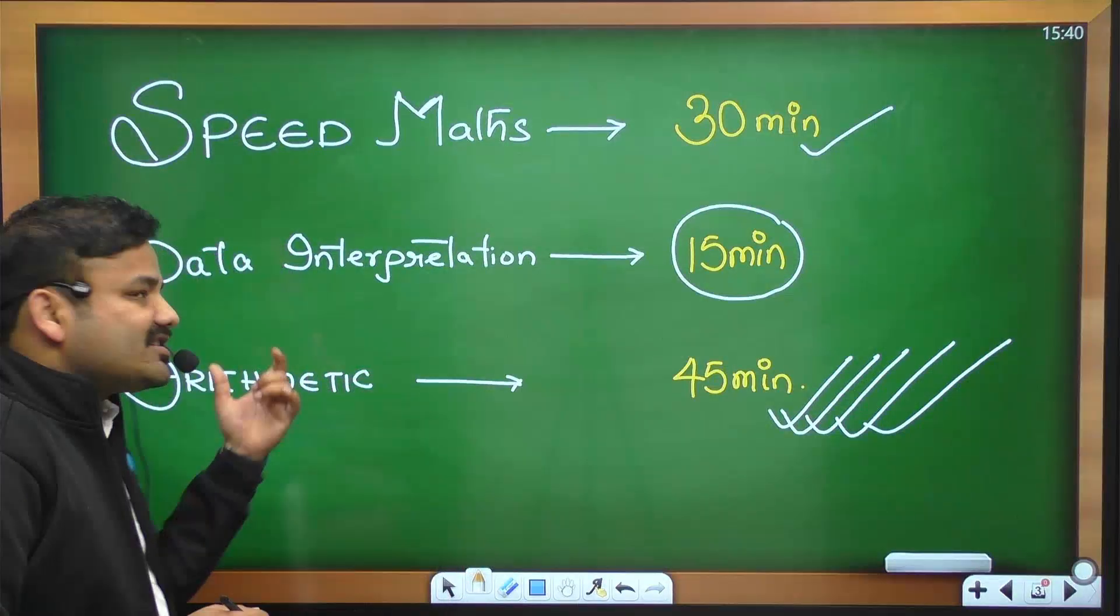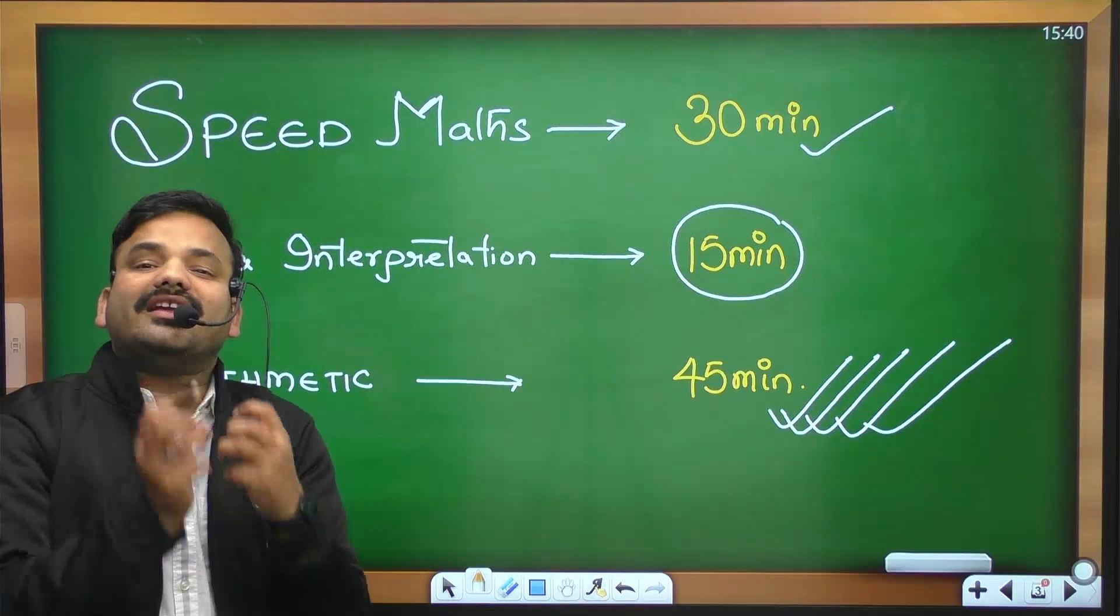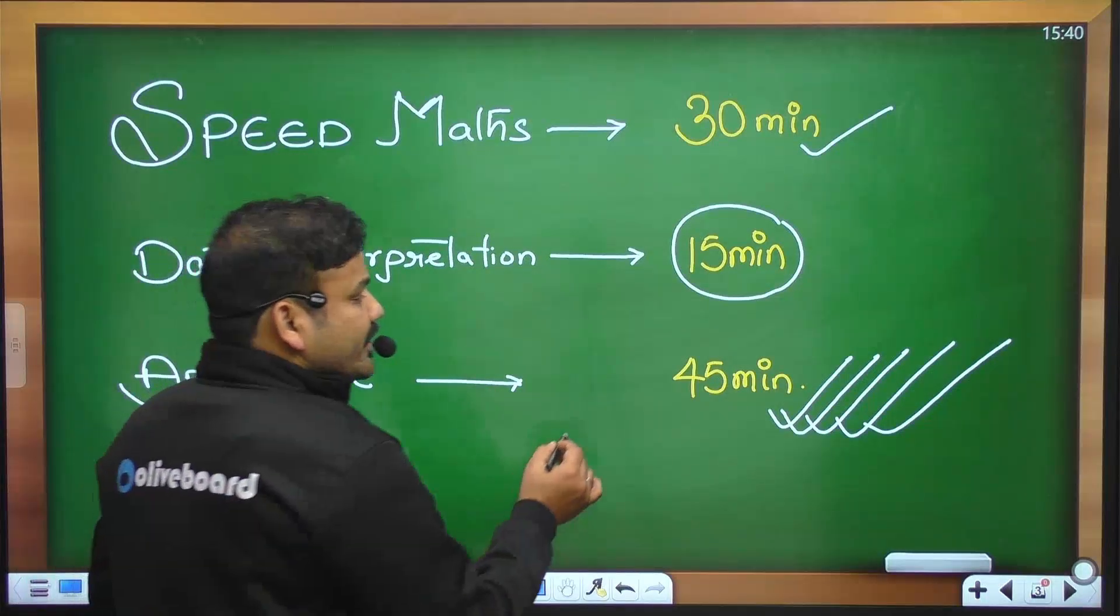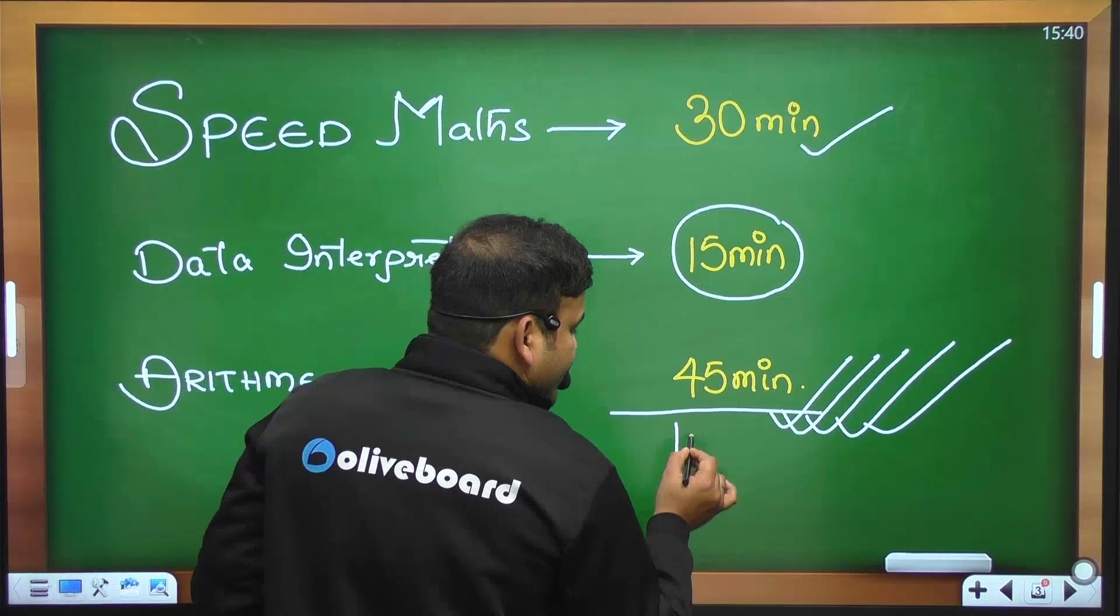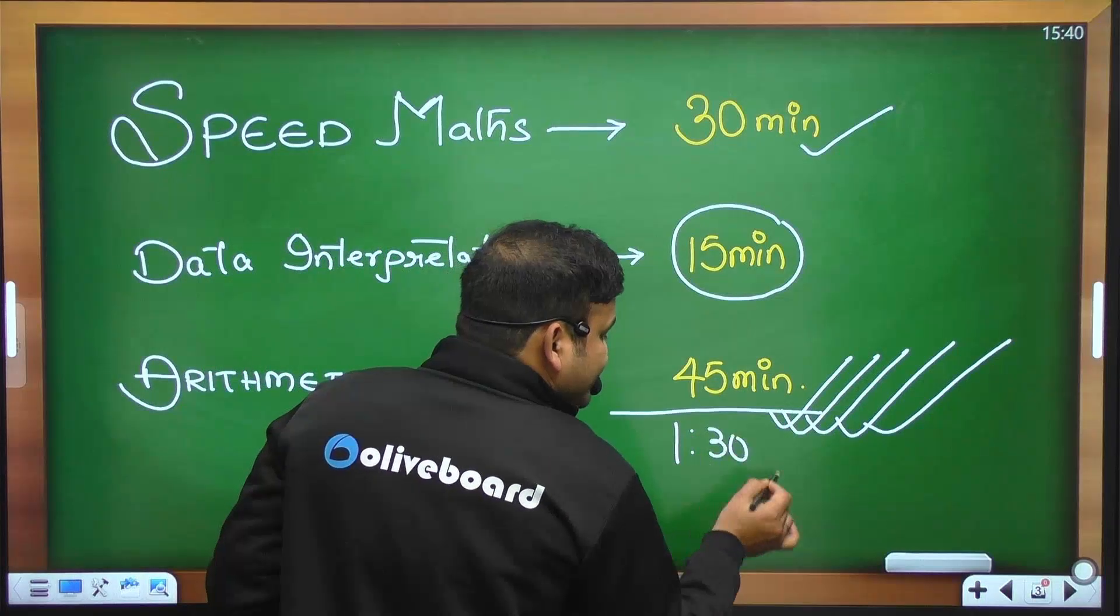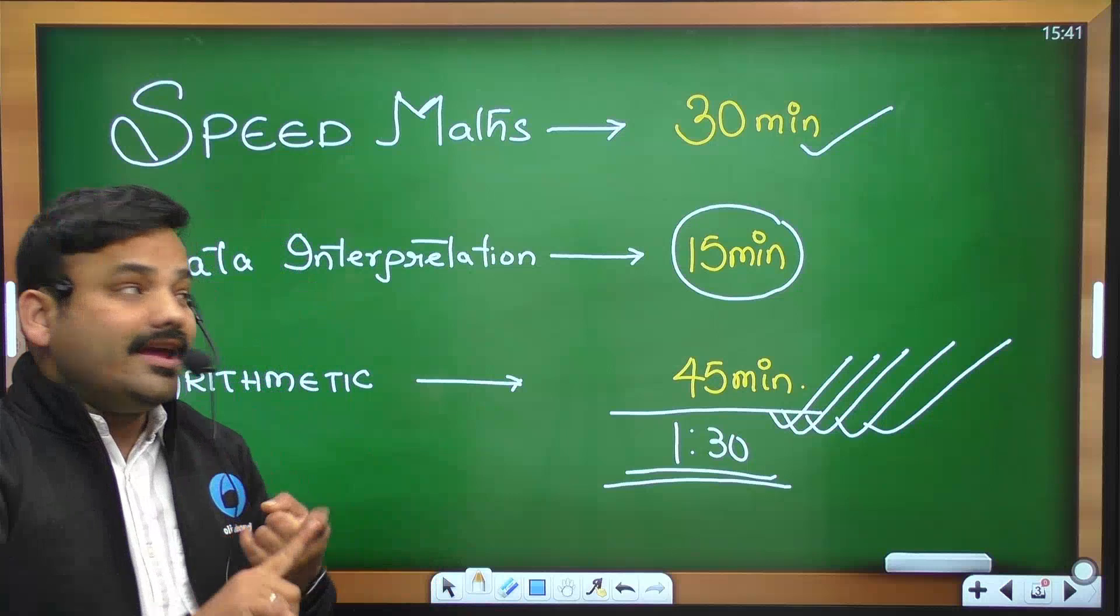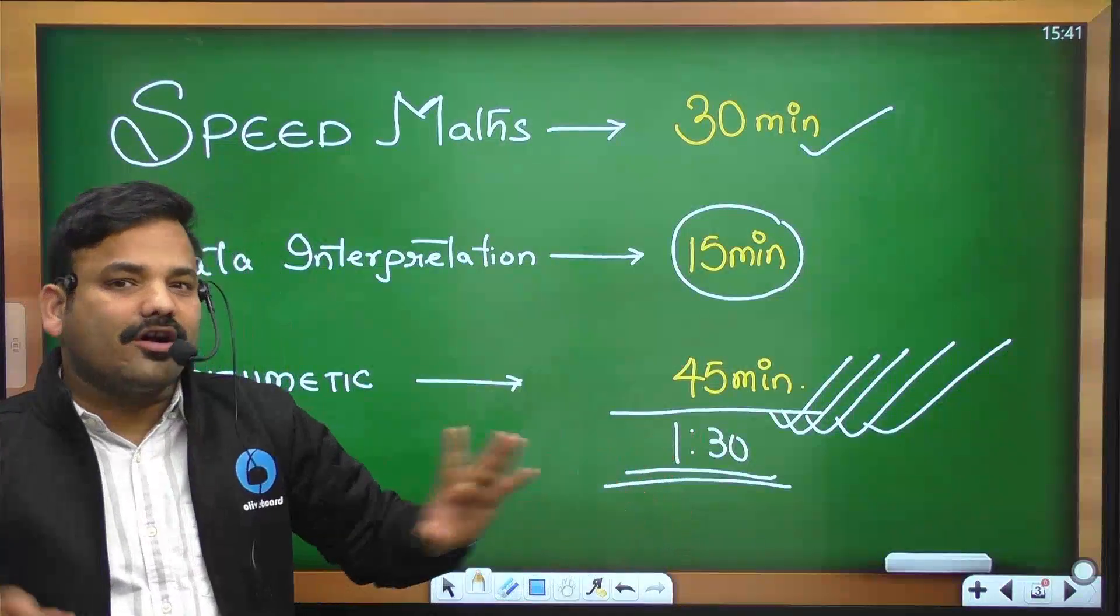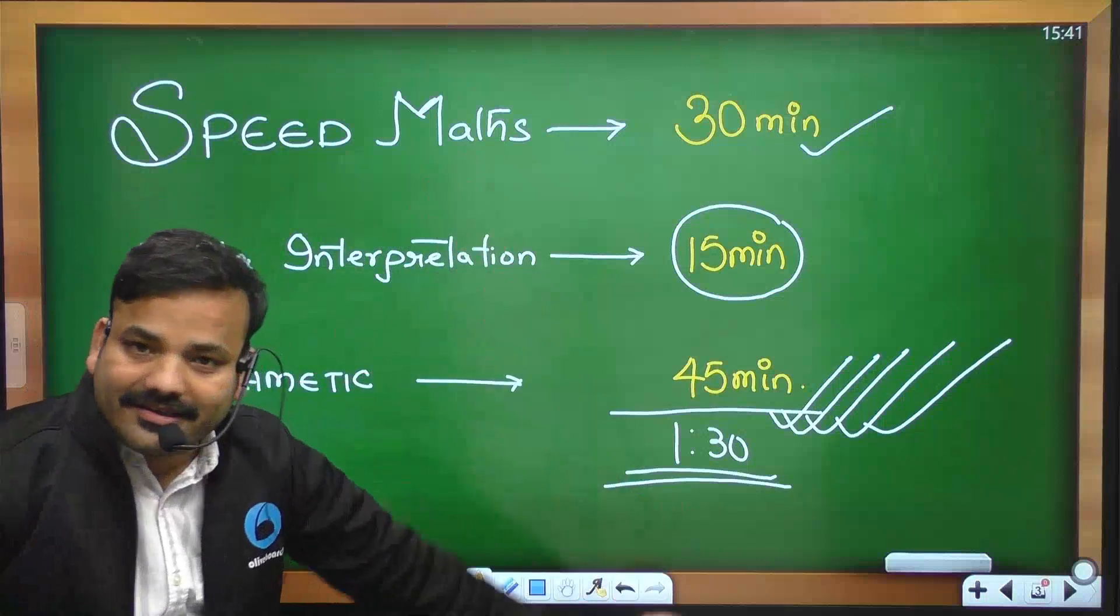Jaisi aapka arithmetic ka section complete hota hai, uske baad aap arithmetic ke hi mixed mock doge is 45 minutes mein. Toh daily ka tenure aapka kya hai? Toh daily ka tenure aapka dedh ghanta ho gaya. Toh ek bachche ko dedh ghanta daily jarur dena chahiye maths pe. Yeh individually maths ki taiyari ki baat karo, mock alag hai. Toh dedh ghanta time dena hi chahiye.